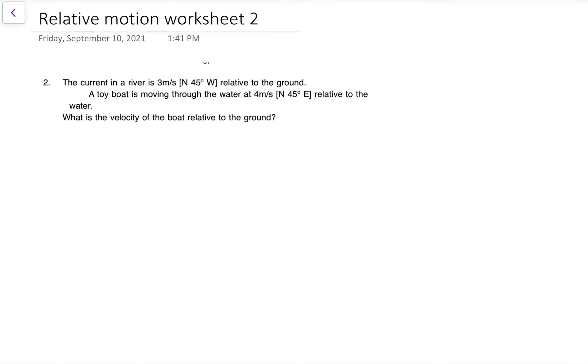For the second one on the worksheet, I'm reading it over. The current in a river is 3 meters per second at 45 degrees west relative to the ground. A toy boat is moving at 4 meters per second at 45 degrees east relative to the water. If we want to know the velocity of the boat relative to the ground, again, we just have to add them.